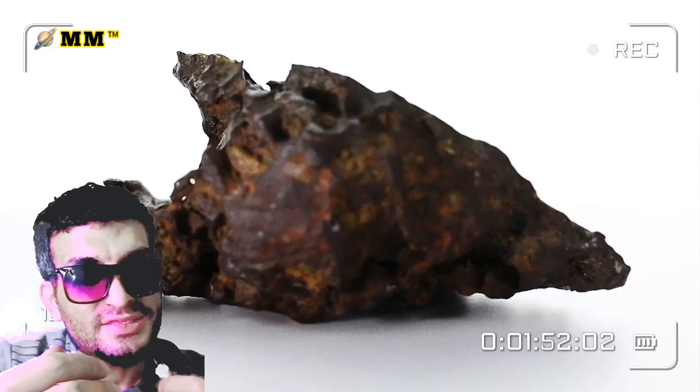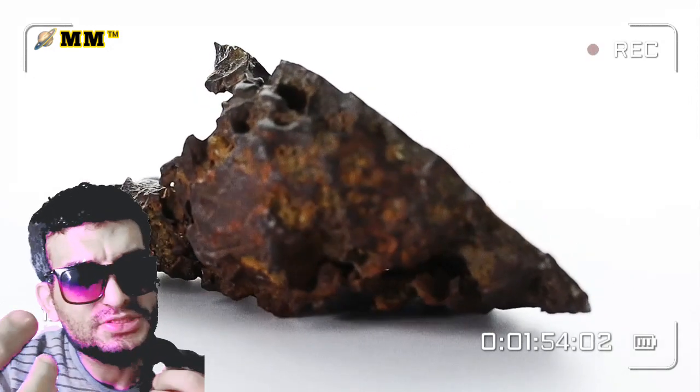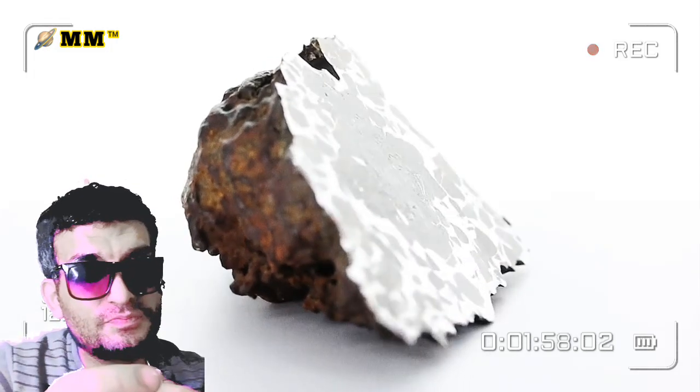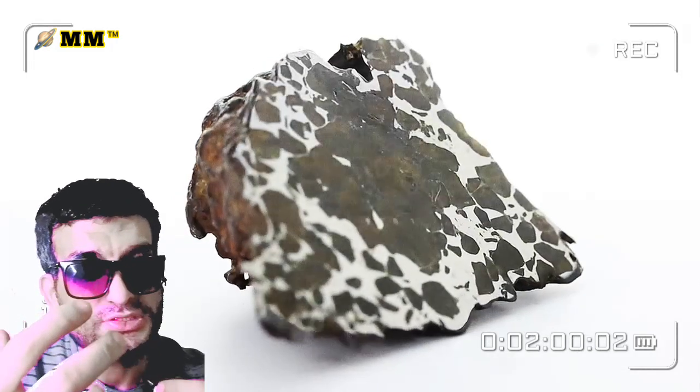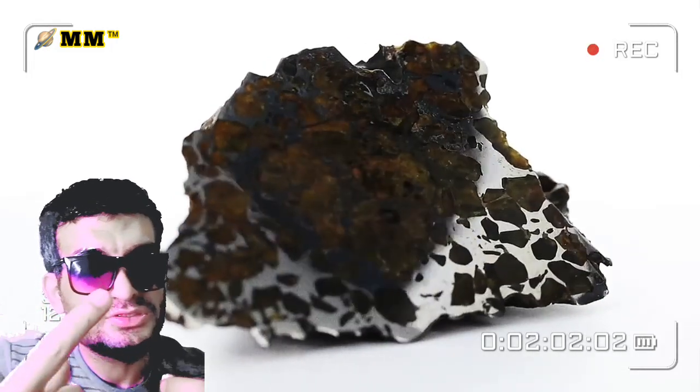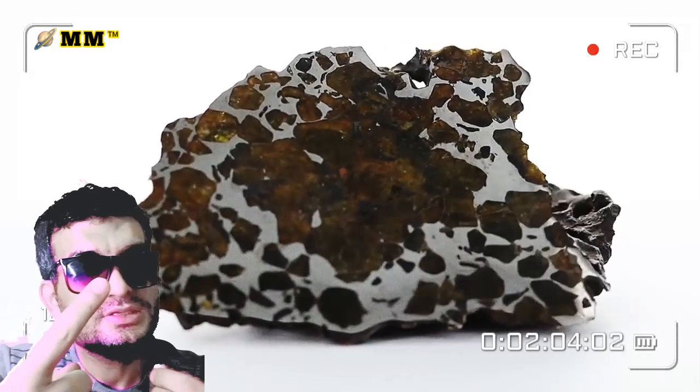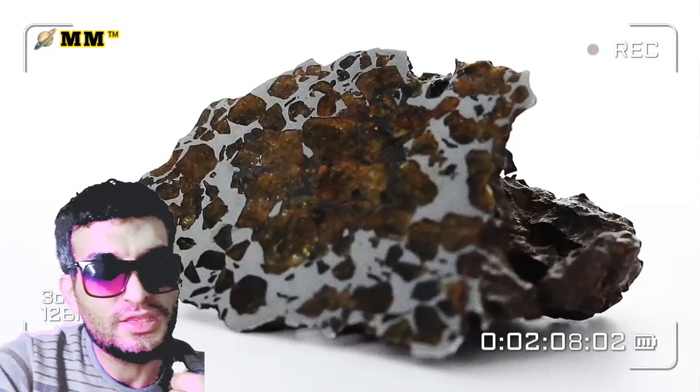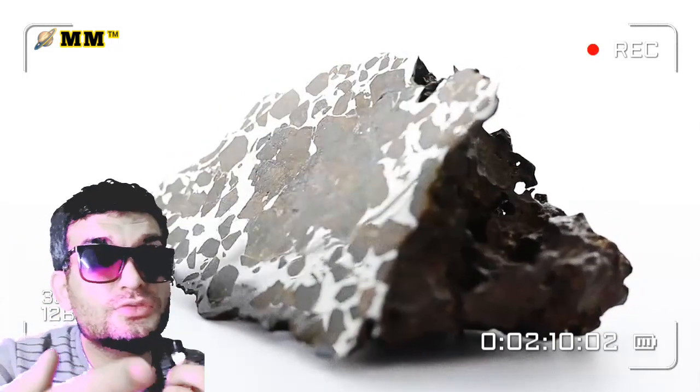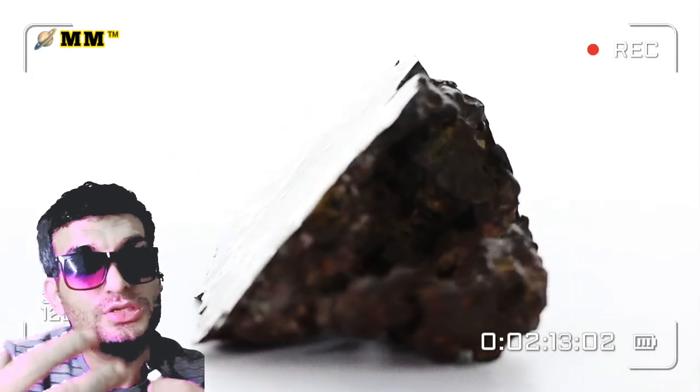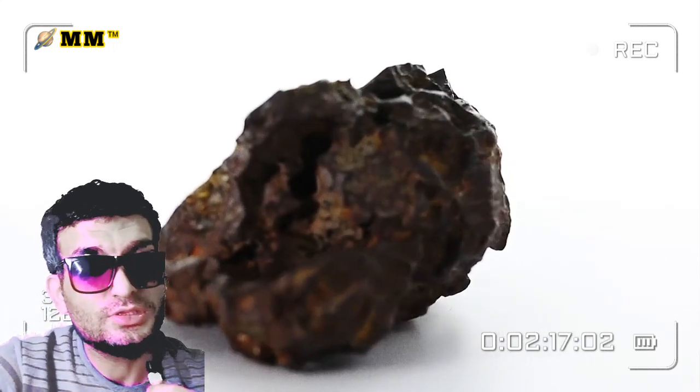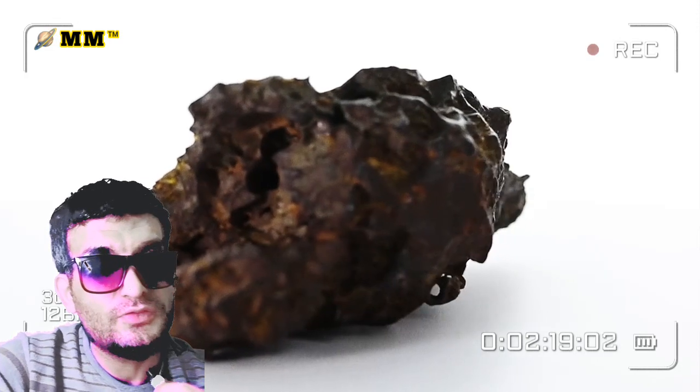Most, about 90% of recovered meteorites, are pieces of asteroids. Very rare meteorites come from the moon, and less than 1% come from Mars. Because of that, Martian meteorites and lunar meteorites are so expensive because they are so rare and so unique.